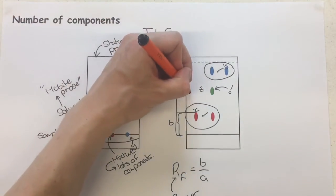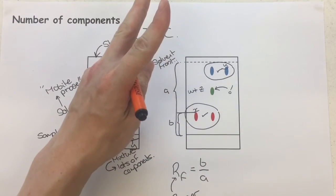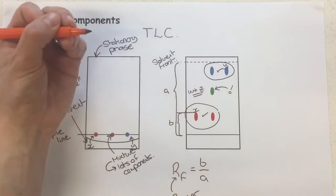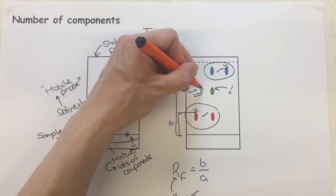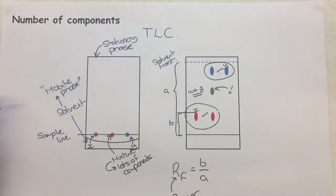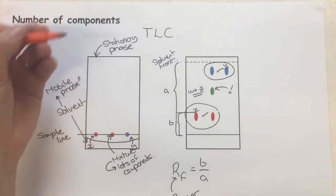But actually, it could also be W. That green dot could be two things. Just because it's one dot doesn't mean that it's not two different components or more. It's just that W and Z could have very similar solubilities in the mobile phase, or similar levels of how attracted they are to the stationary phase.